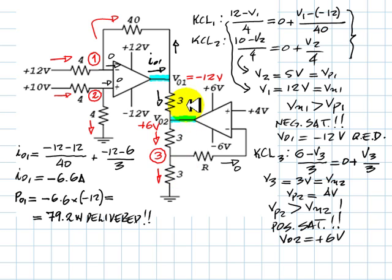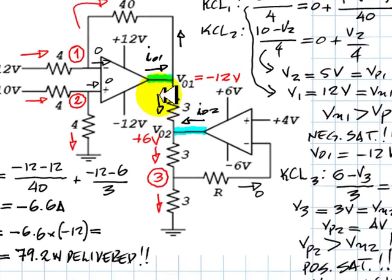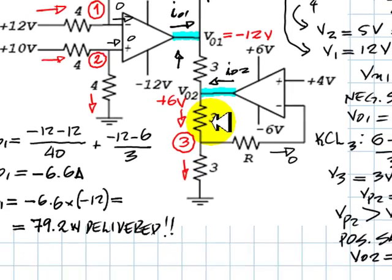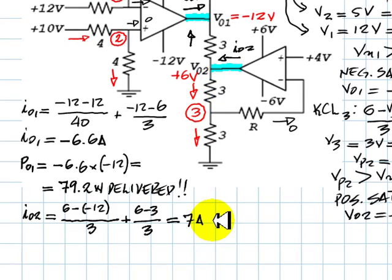And now for the second OPAMP, we need to compute this output current, IO2, which is this current, 6 minus minus 12 divided by 3, plus this other current, which is 6 minus V3, 3V, divided by 3. That current is 7A.